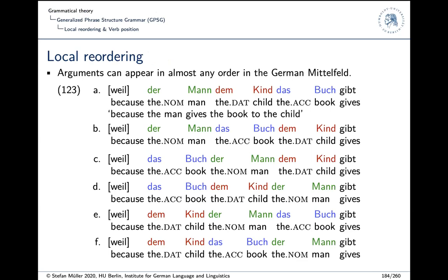The first thing we talk about when discussing theories is local reordering, which we already discussed in the GB lectures. The example is 'Weil der Mann dem Kind das Buch gibt,' with nominative, dative, and accusative color-coded. The first example is a normal or unmarked order, but we can have all six permutations: A, B, C, D, E, and F are all possible in principle.